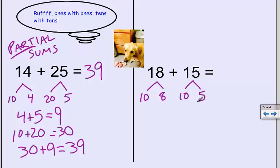So what I can do now is I can add my tens and my ones. So I'm going to add 8 plus 5, which makes 13.